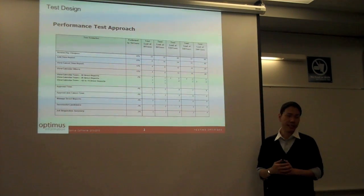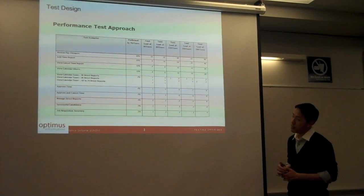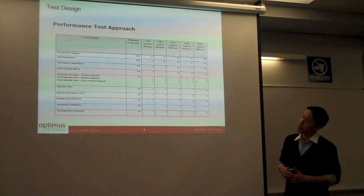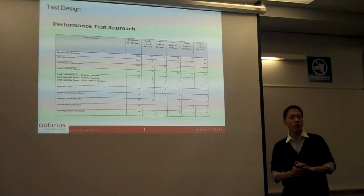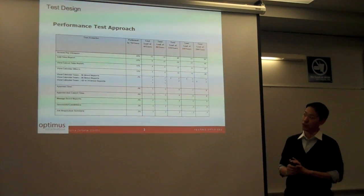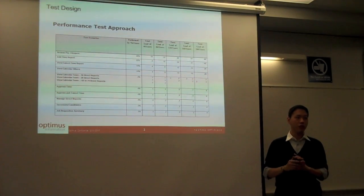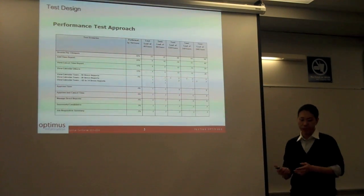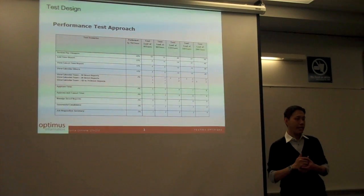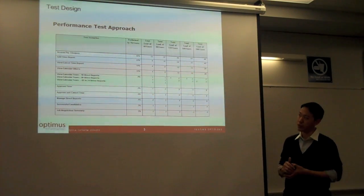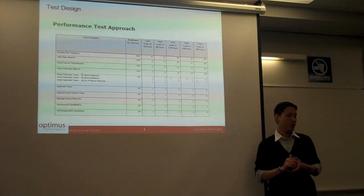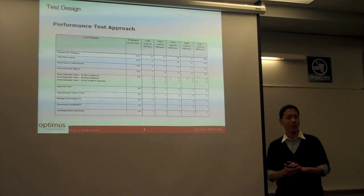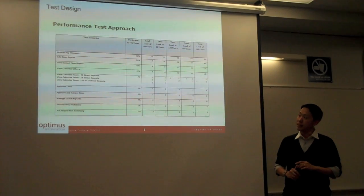Here comes the test design part of performance testing. If we look at this table, on the left column we have a bunch of test scenarios. Identifying business transactions or user scenarios is always the first step of any performance or load testing project. Normally we have to talk to business people, the users, or get statistics from the current system to see what transactions are most frequently used, then capture them. If they are too complex to simulate in scripting, we will break them up.